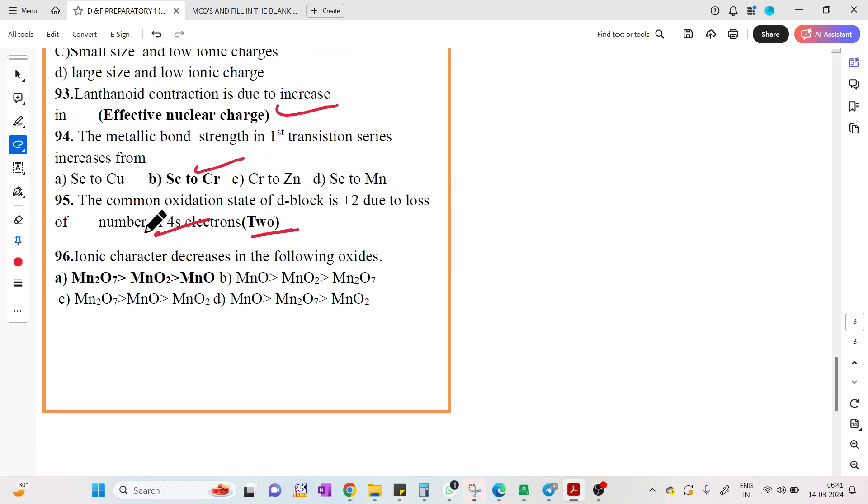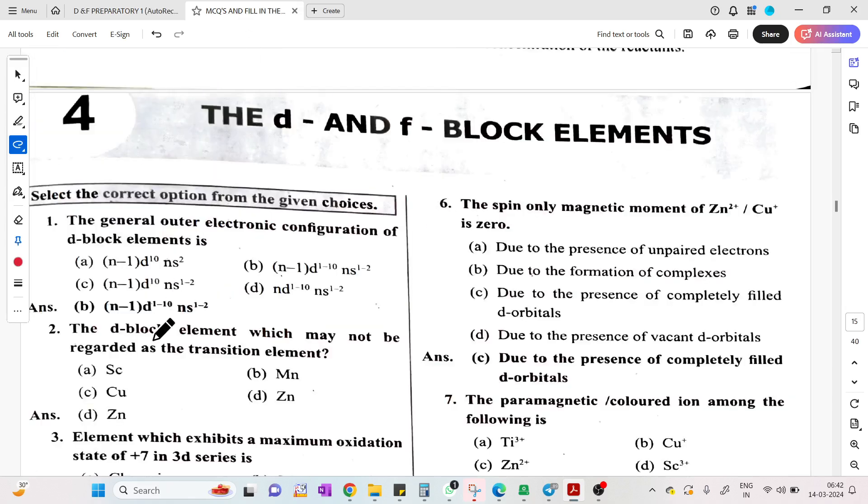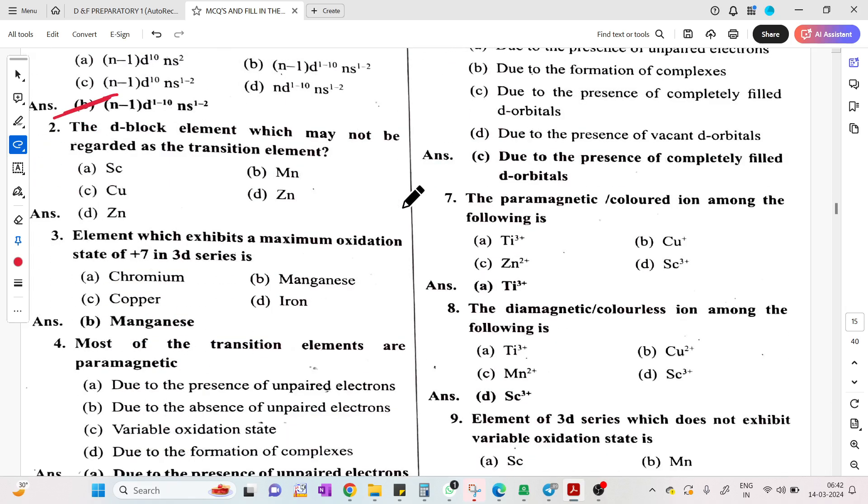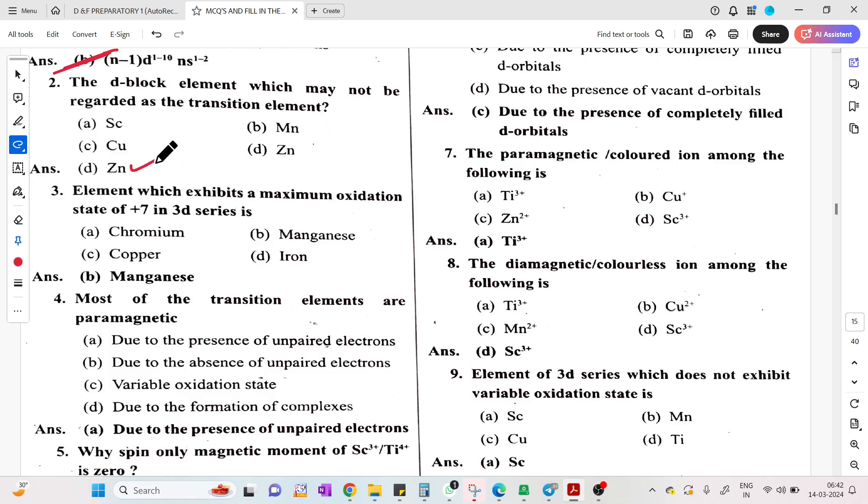D-block element has plus 2 oxidation state due to loss of 2 electrons from 4S. Ionic character decreases in the order. As oxidation state decreases, ionic nature increases, so the answer is A. General configuration: N minus 1, D 1 to 10, Ns 1 to 2.